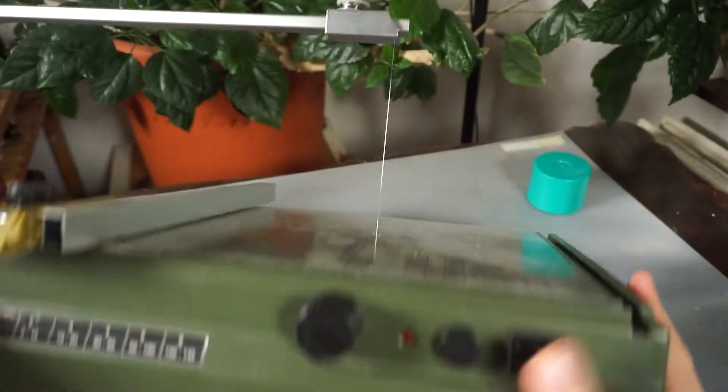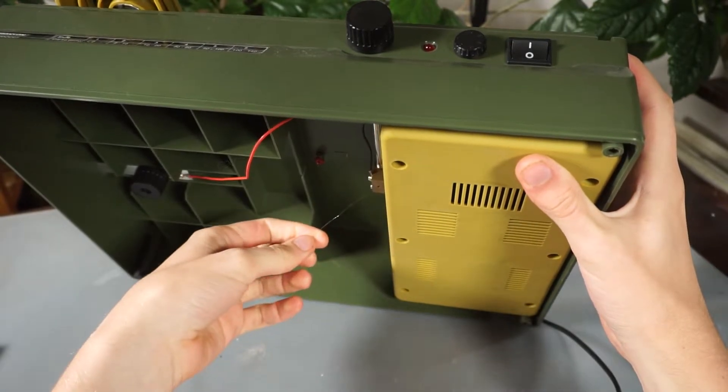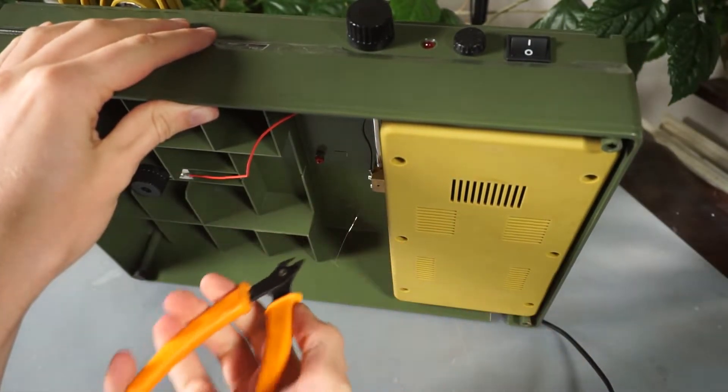Now let's take a quick look under the machine. Here we can see a bit of wire coming out. So you can just snip off the excess.